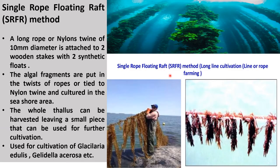The single rope floating raft method — also called the long rope method — uses a nylon twine of 10 meter diameter attached to wooden stakes with two synthetic floats. Algal fragments are put in a twist of rope or tied to the nylon twine and cultured in a seashore area. The whole thallus can be harvested, leaving a small piece for further cultivation. This method can be used for the cultivation of Gracilaria.